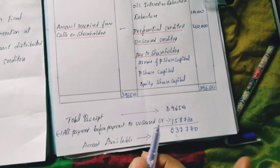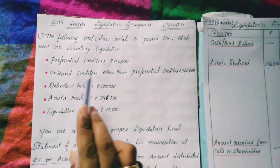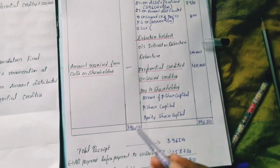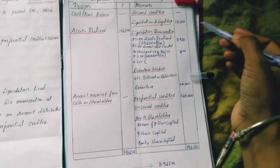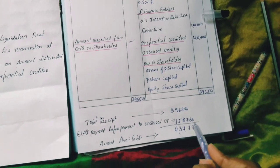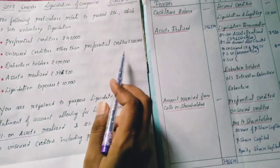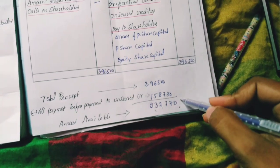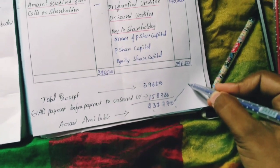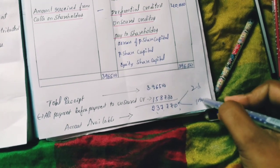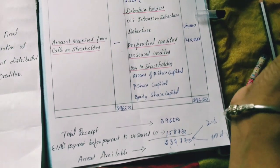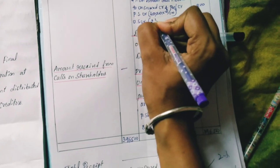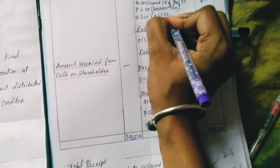Unsecured creditors are owed Rs.3,20,000, but we only have an available amount of Rs.2,37,770. The amount is not sufficient. First calculate the 2% remuneration on the amount paid to unsecured creditors. The available amount for unsecured creditors is Rs.2,37,770.